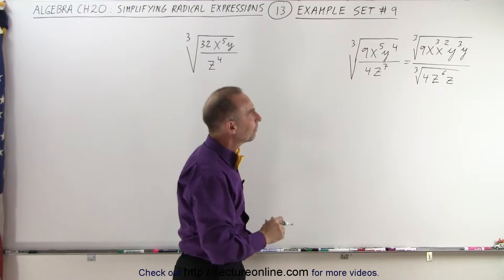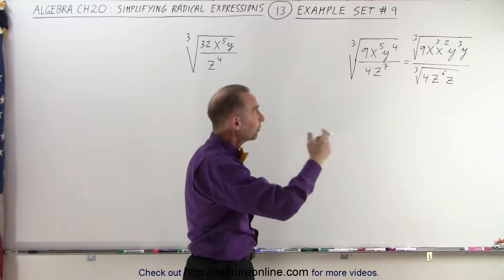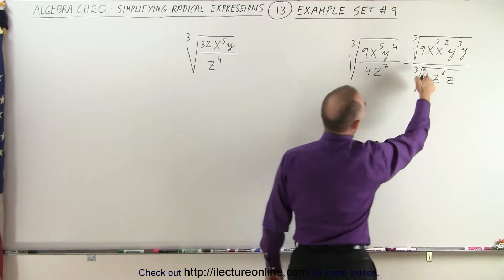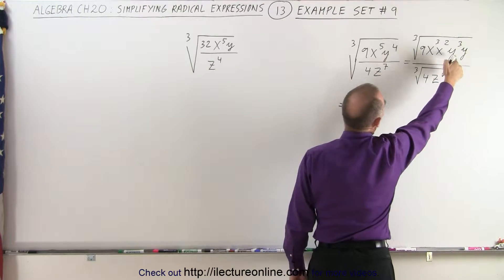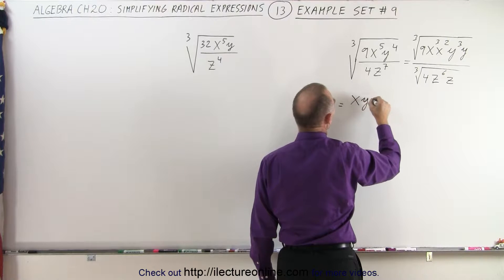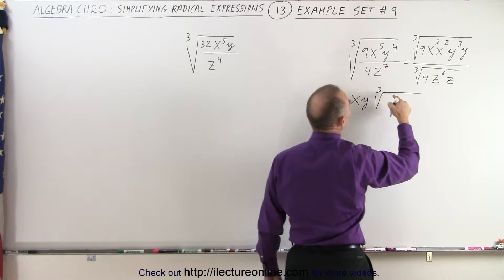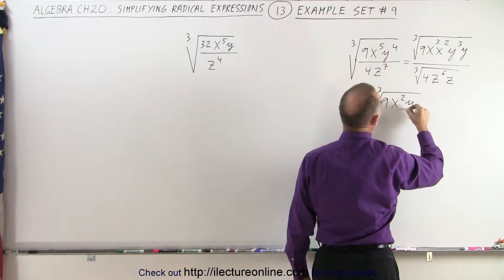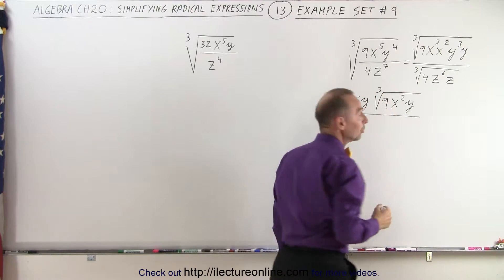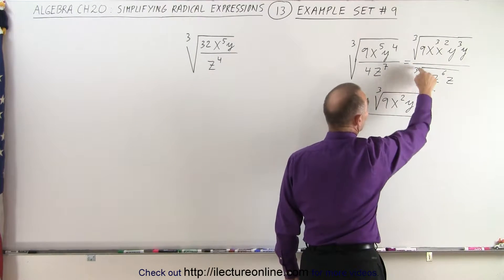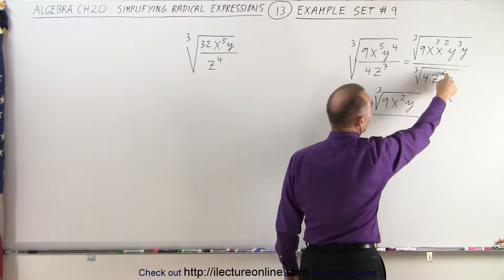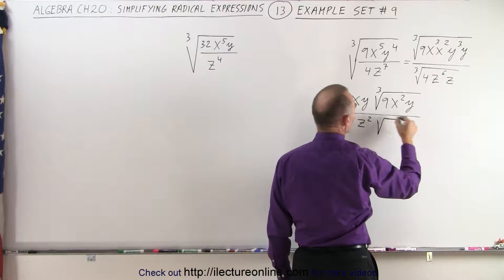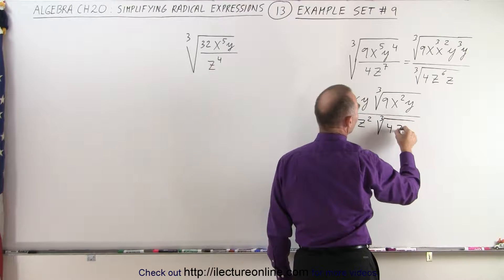Now, why did I do that? Because whenever I have a power that's a multiple of the root, I can take it outside the radical. So this can be written as — notice I can pull out an x, and I can pull out a y. So this becomes x times y, and what I have left is the cube root of 9, x squared, and y to the first power. In the denominator, I can do the same thing. I have z to the sixth — I take the cube root of that, I get z squared. Then I have left the cube root of 4 times z.